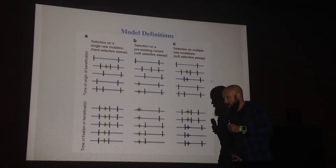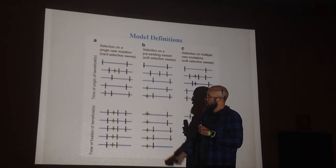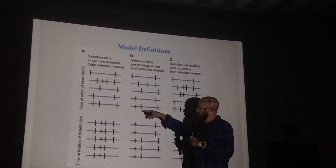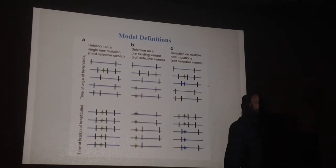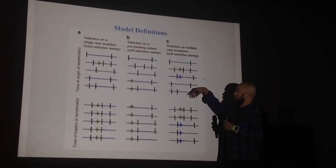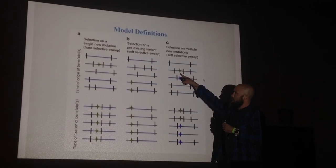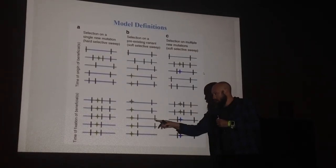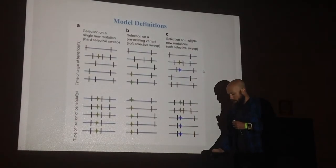Soft selective sweeps are referring to a variety of things. These are two common ones. One is selection on standing variation. We have some mutation that was at some frequency in the population greater than 1 over 2N, segregating neutrally or slightly deleteriously. At some point it became beneficial, and when it's beneficial it's sitting on multiple haplotypes, so those haplotypes can all be brought to some intermediate frequency because just the beneficial mutation needs to come to fixation.